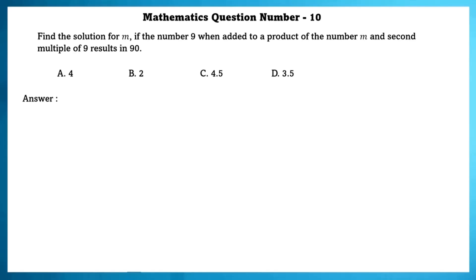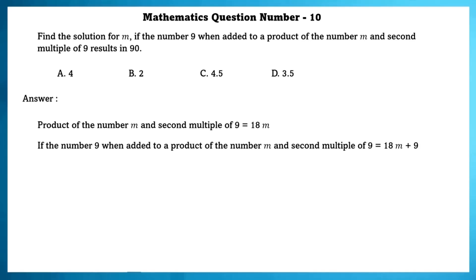Mathematics question number 10. Find the solution for m if the number 9 when added to the product of the number m and the second multiple of 9 results in 90. The product of m and the second multiple of 9 is 18m. So 18m plus 9 equals 90, giving the value of m as 4.5.